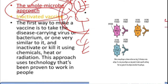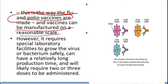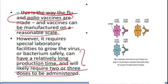How do we inactivate it? The first way to make a vaccine is to take the disease-carrying virus or bacteria and inactivate or kill it using chemicals, heat, or radiation. This approach uses technology that's been proven to work in people — this is the way flu and polio vaccines are made. Vaccines can be manufactured on a reasonable scale, but it requires special laboratory facilities and can have a relatively long production time. Two or three doses are likely required, which is a disadvantage of the inactivated approach.